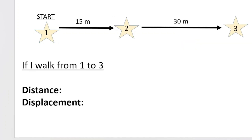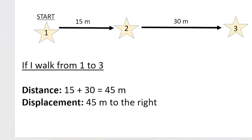See if you can fill this one out. If we start at position one, move 15 meters to position two, and carry on for another 30 meters to position three — if I walk from one to three, what's my distance and displacement? Well, if you walk from one to three, you've walked 15 plus 30 meters, that's 45 meters. For distance, you don't need a direction — it's just 45 meters. For displacement, it's 45 meters to the right, or in the positive direction, or east.